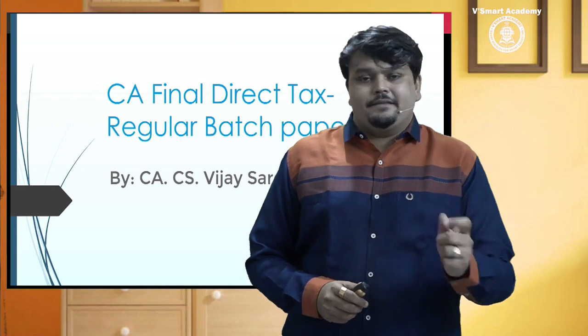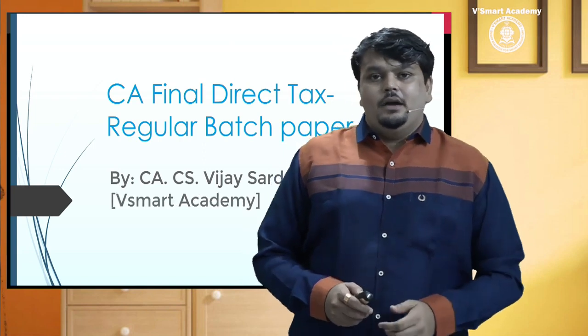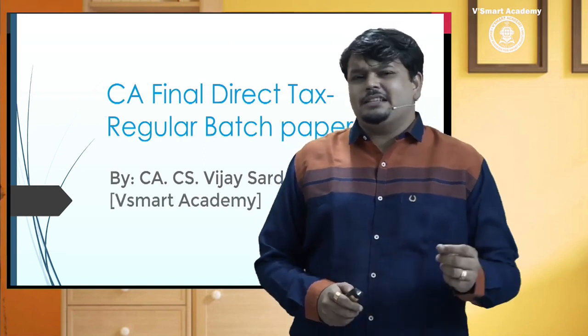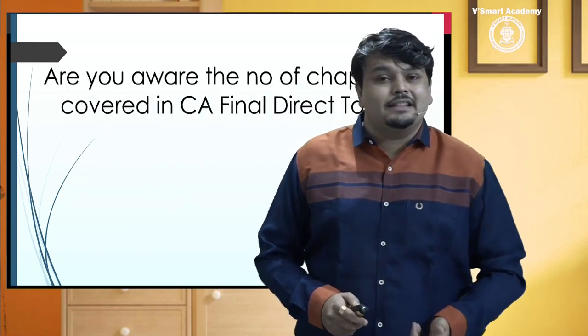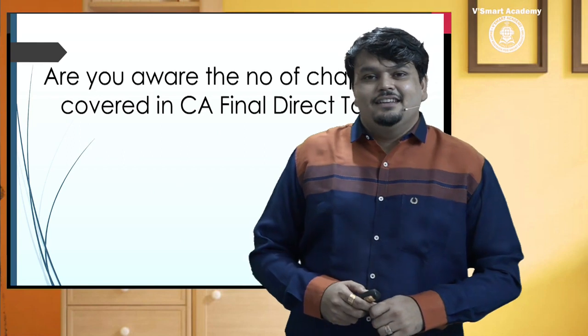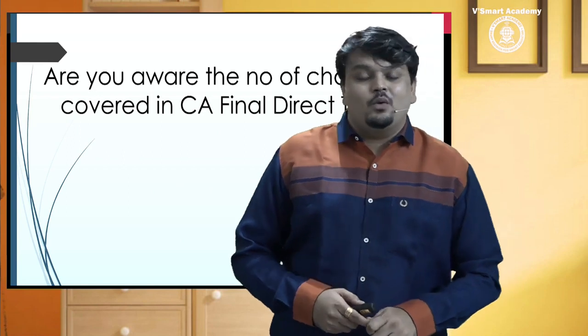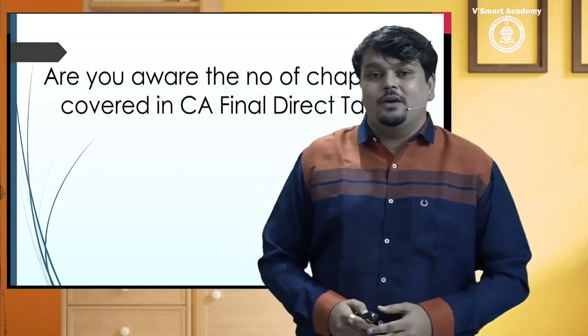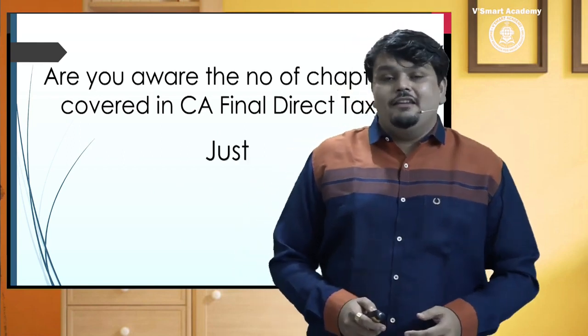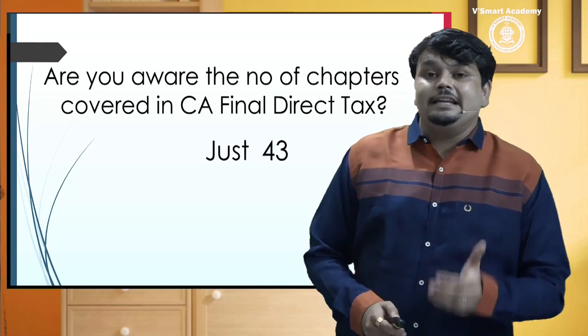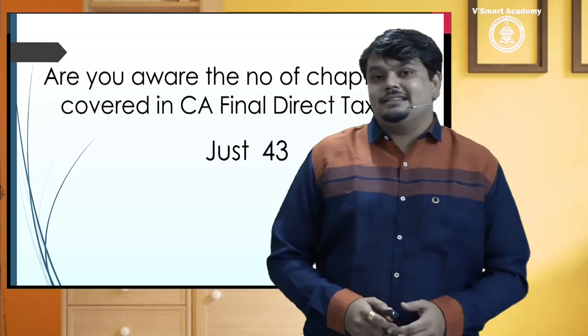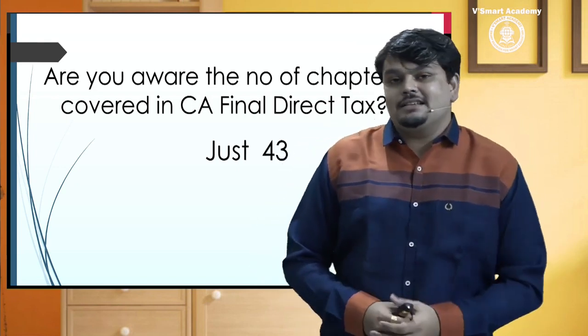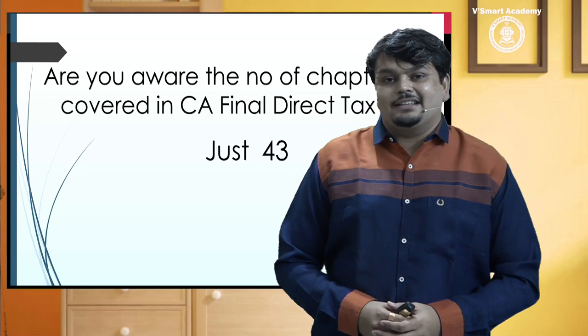Filhaal, main Paper 7 ki baat kar raha hoon. Paper 7 ki baat karte hue, main aap se bas ek chhota sa sawaal poochna chahta hoon. Jab aap decision lete hain, aapko pata hai ki direct tax ke andar mein kitne chapters aate hain. Inter level pe no doubt, aapko 15-16 topics rahe honge. Final level pe around 43 topics hain. Yes, 43 topics hain CA Final direct tax mein.